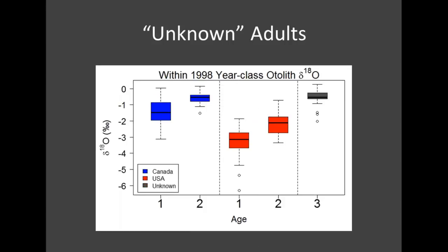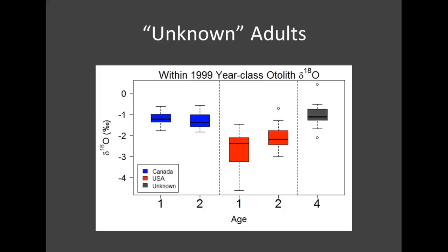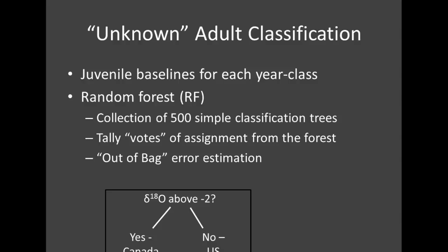Bringing in those unknown samples — all captured in the United States — we expected them to more closely align with the US captured age-1 and age-2 fish, but for the 1998 year class they're actually very closely matched to the Canadian fish. This is also true for the 1999 year class. To determine what proportion of these unknown samples originated from each natal habitat, we used classification methods. The basic idea is to take the baseline data, create a function relating it to a given region of origin, and then use those functions to classify unknown samples and give their likely region of origin.